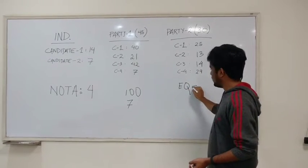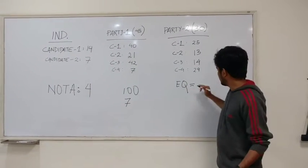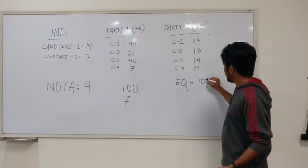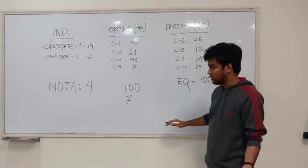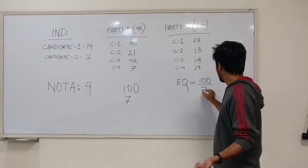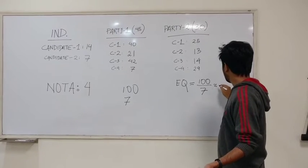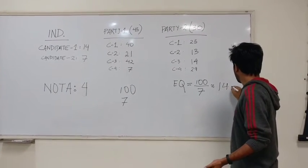The EQ is quite straightforward. It's basically the total number of people on campus, which in this case is 100, divided by the number of seats in this house, which is 7. So this is approximately 14 point something.